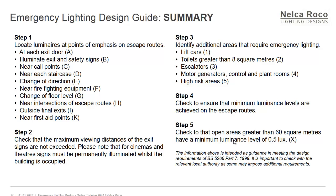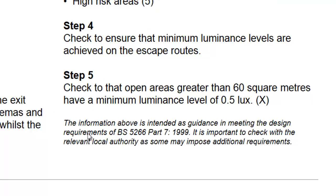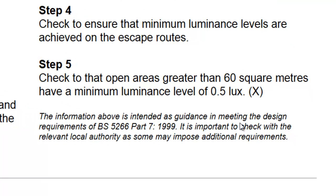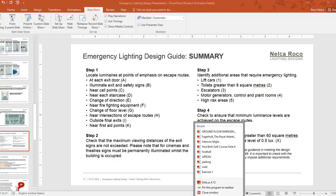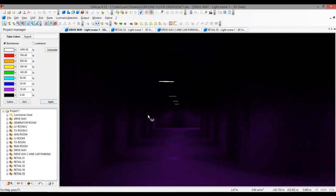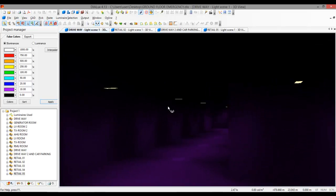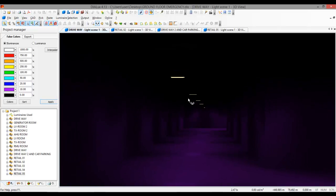To summarize: you need to go through Steps 1 to 5 as described. The information above is intended as guidance in meeting the design requirements of BS 5266 Part 7 of 1999. It is important to check with the relevant local authority, as some may impose additional requirements. On the next video, I will teach you how to do a lighting calculation for emergency lighting in corridors, open areas, toilets, and hazardous facilities.